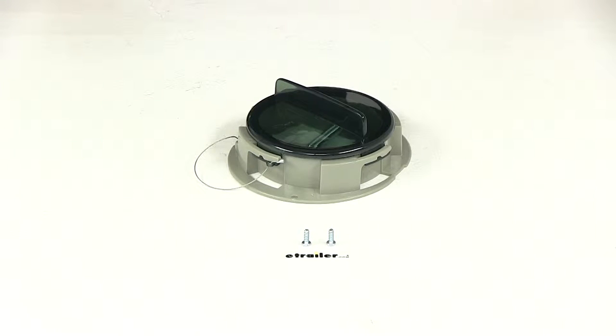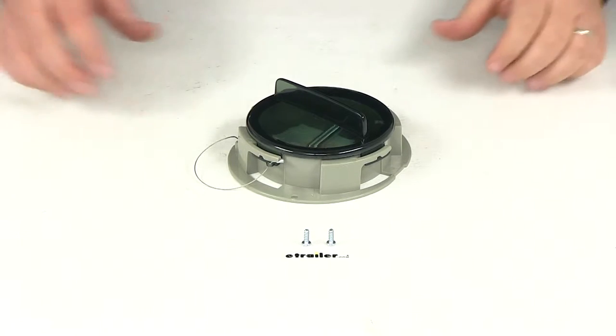Today we're going to be reviewing part number GT-1007. This is the document holder with a cap from Redline Trailer Cargo Control.